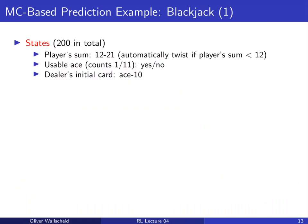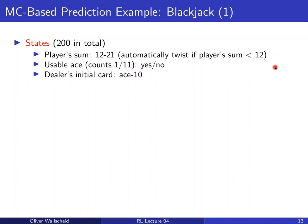A second example for MC prediction is the blackjack problem from Barto and Sutton, with slightly modified rules. The state space has roughly 200 states: the player's hand sum (12–21, since below 12 the player automatically twists), a binary usable/non-usable ace indicator, and the dealer's visible card (1–10). This gives approximately 200 states total.